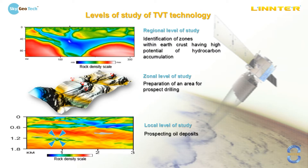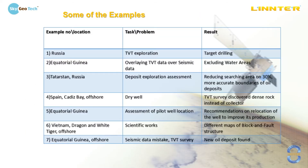TVT technology has three levels of study: regional level of study, zonal level of study, and local level of study. Every level has its own purposes and tasks. We have different examples in different countries, including TVT explorations on green fields, brown fields, assessments of dry wells, scientific works and more. Let us go through step by step.